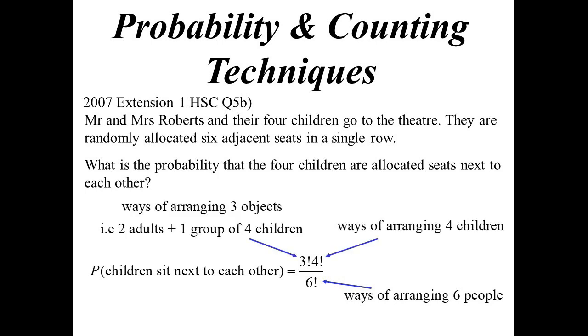Well, the four children want to be together. They're going to be adjacent seats. So we work out their arrangement. That's four factorial. Then as far as we're concerned, we now have three objects. The group of the four children plus the two parents as well. So that's the three factorial there. And that works out to be one in five.